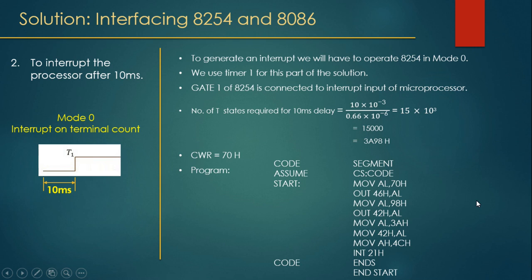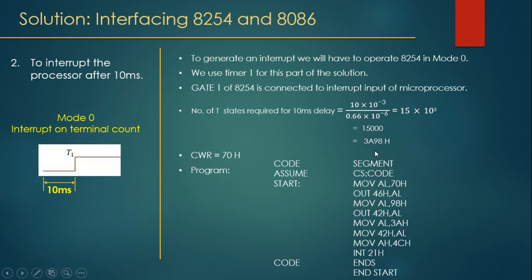Program for Part 2: move AL, 70H and OUT 46H, AL to configure the CWR. Then move AL, 98H (lower byte) and OUT 42H, AL to write to counter 1. Then move AL, 3AH (higher byte) and OUT 42H, AL to write the MSB to counter 1. The final instructions bring control back to the command prompt.